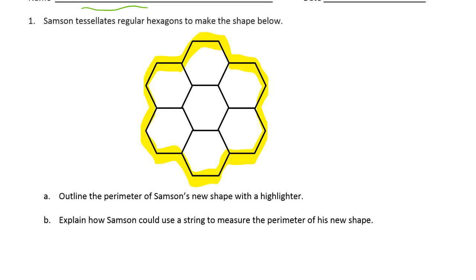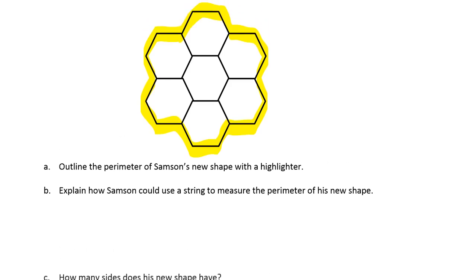Now explain how Samson can use a string to measure the perimeter of his new shape. Well, what would you do if you had a string? Oh no, not I. Samson could. You could lay the string down along the perimeter.